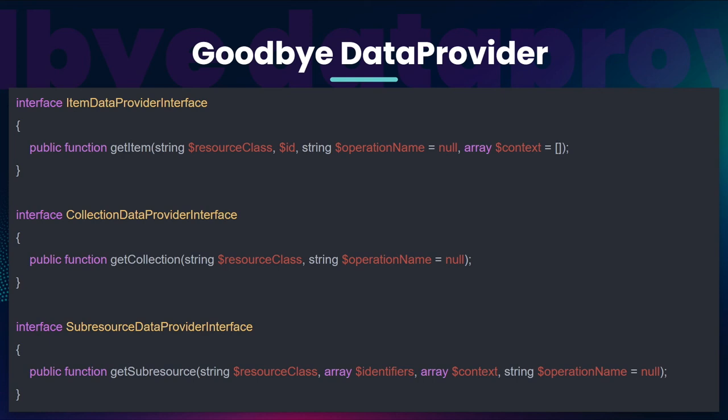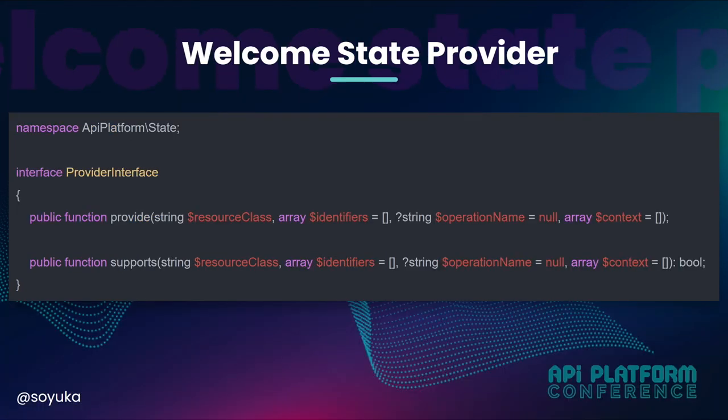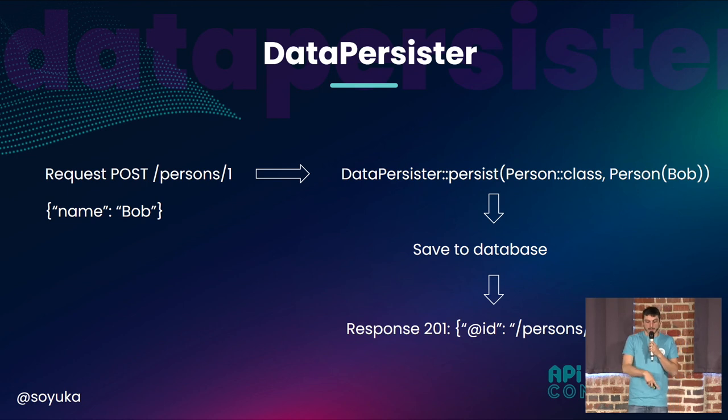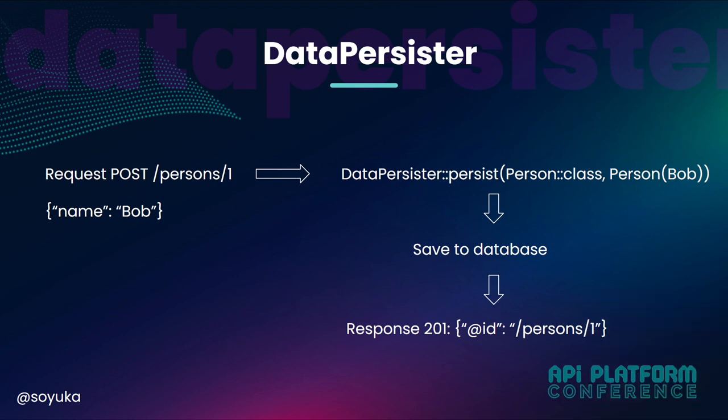We wanted to simplify this and we came with the new state provider interface, which has only two methods: provide, and whether this provider is supported or not. On the persisting side, when you send a POST request, you call what we call a data persister. You can implement this interface yourself and, for example, save to the database.